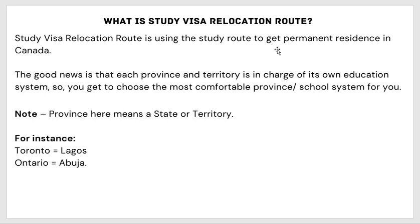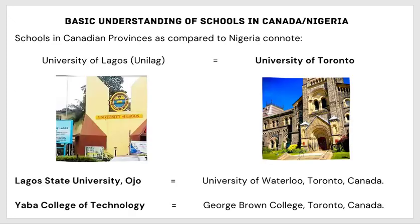What is the study visa relocation route? The study visa route is using the study route to get permanent residency in Canada. The good news is that each province in Canada is in charge of its own education system, so you get to choose the most comfortable province and school for you. Note that 'province' here means a state — just like Toronto is like Lagos, and Ontario is like Abuja in Nigeria.